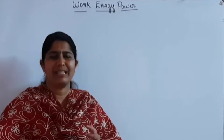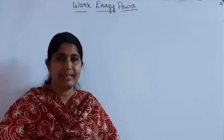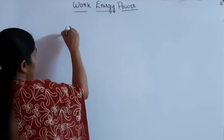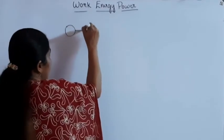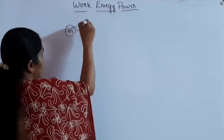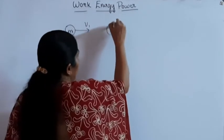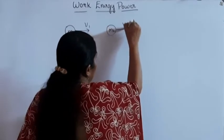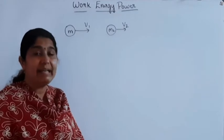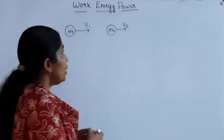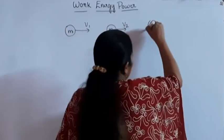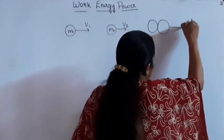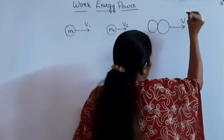First of all, we want to discuss certain theory portions related with collision. In the case of collision, two bodies collide — M1 is the first body moving with velocity V1, and M2 is the body moving with velocity V2. If the collision is perfectly inelastic, then these two bodies stick together.